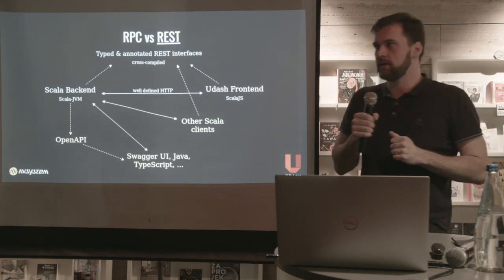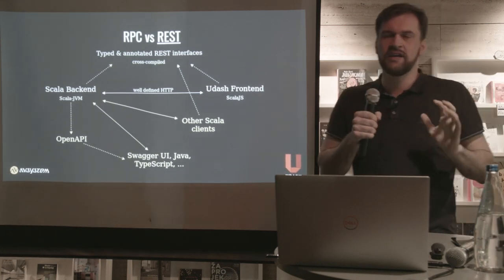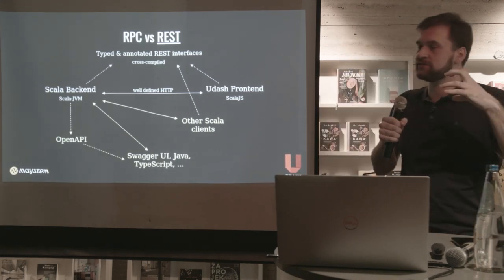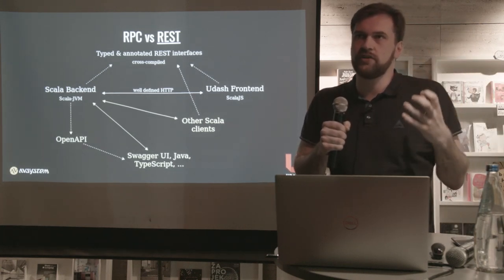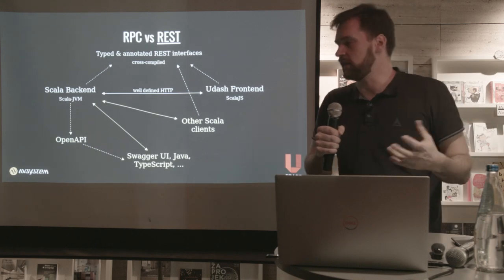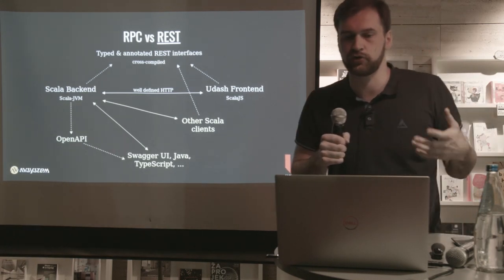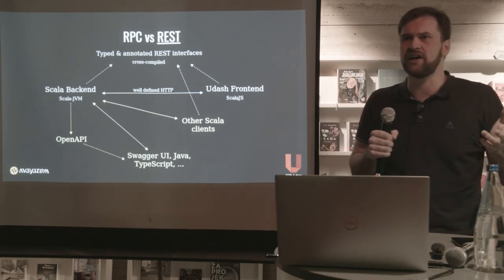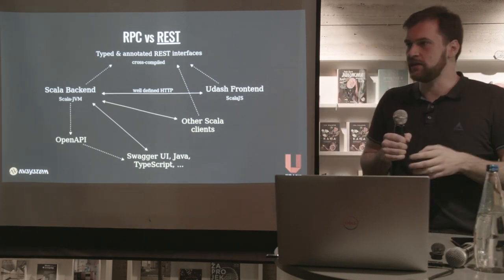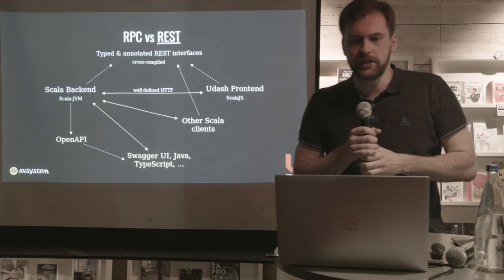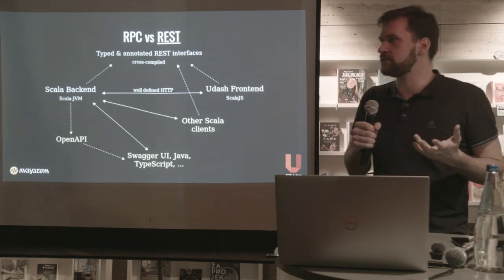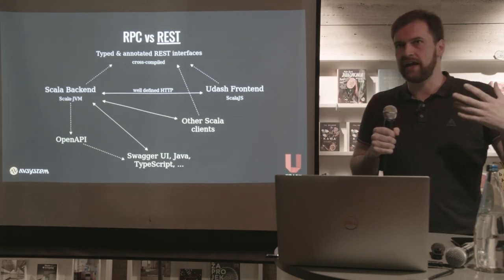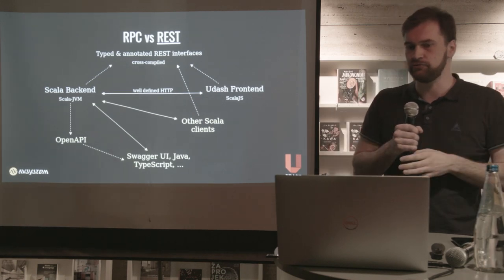We also get interactive documentation for free with Swagger UI. It's even possible with a bit of glue code to use these REST traits from other JVM languages than Scala directly, without going through code generation. It requires some glue code mostly because Scala features are not very friendly to Java code, but it can be done. Usually we put these typed REST interfaces in a separate artifact which we can publish, and then clients written in various JVM languages can reuse that.